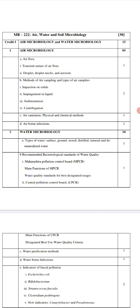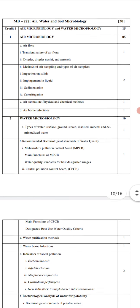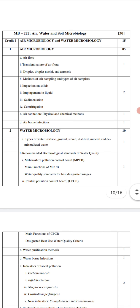Next is waterborne infections. Just like airborne infections, waterborne infections are those caused by drinking polluted or contaminated water. These include typhoid, dysentery, and cholera. We are already aware of these diseases but we will study them in detail.